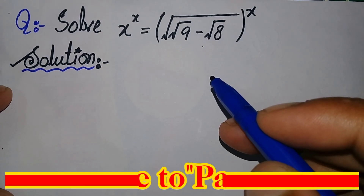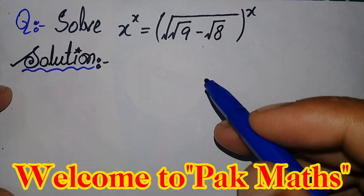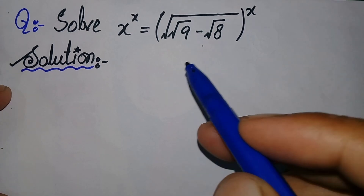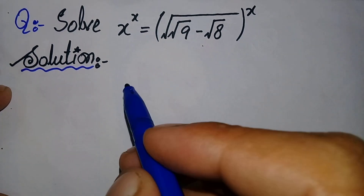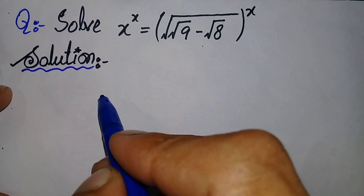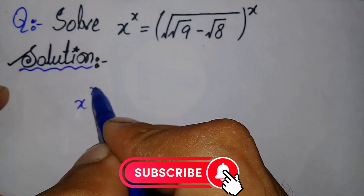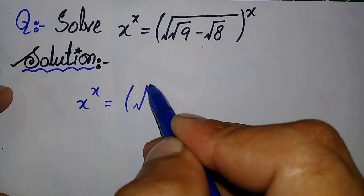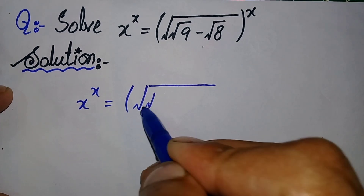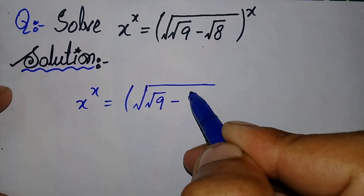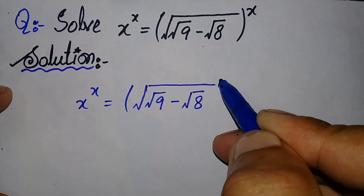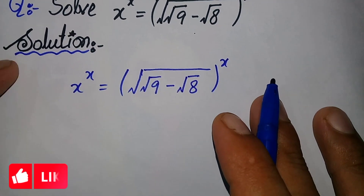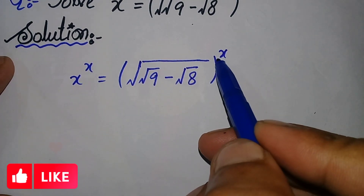Hi everyone, welcome to Parkmas. In this video I am going to solve this exponential math problem. Let's start — we will rewrite the question in solution again. The question is: x raised to power x is equal to parenthesis square root of square root of 9 minus square root of 8, close parenthesis, whole raised to power x.